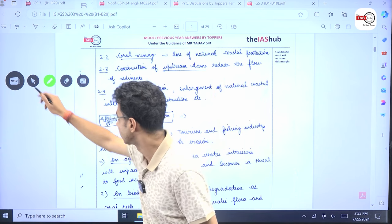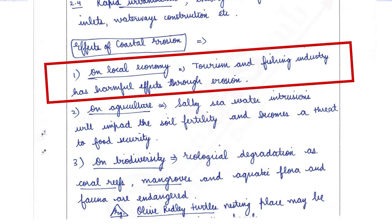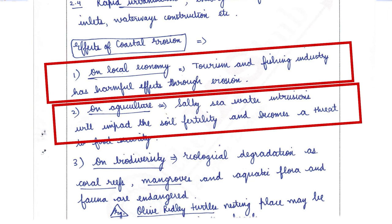Then, what are the possible effects? Number one. On local economy. Tourism and fishing industry has harmful effects through the erosion. On agriculture. We see salty sea water intrusions could be there. That could impact the soil fertility and in turn affect the productivity of the area.